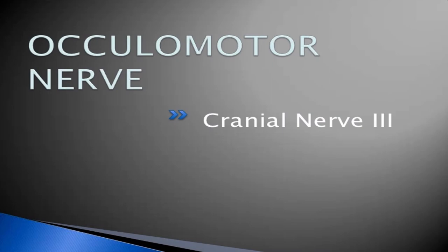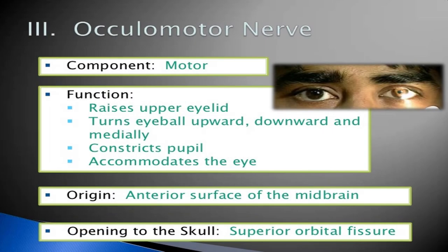The oculomotor nerve is the third cranial nerve. Its component is motor. Its function is: it raises the upper eyelid, turns the eyeball upward, downward, and medially, constricts the pupil, and accommodates the eye. Its origin is the anterior surface of the midbrain. The opening of the skull is the superior orbital fissure.